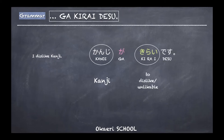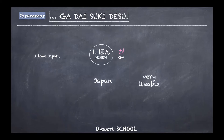When you want to say you dislike something, you use kirai. For example: kanji ga kirai desu — I dislike kanji. Note that with kirai, we return to using ga. However, if you use wa instead — kanji wa kirai desu — it implies you've mentioned other things you like and are now contrasting. So the particle depends on context.